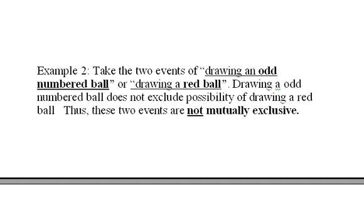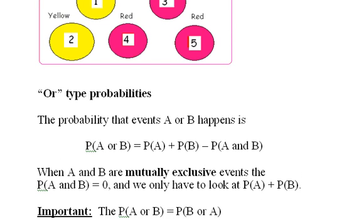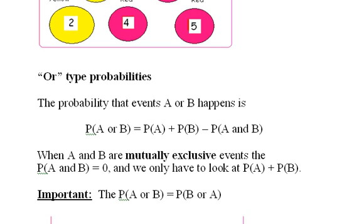This is important because when we talk about OR-type probabilities: the probability that events A or B happens equals the probability of A plus the probability of B minus the probability that both A and B happen at the same time. When A and B are mutually exclusive events, the probability that both happen at the same time equals 0, and we only need to add the probability of A plus the probability of B. Also note: the probability of A or B equals the probability of B or A — you can switch them around.